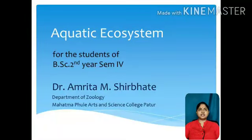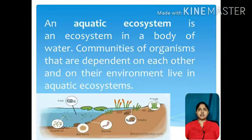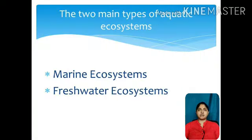Hello friends, today we will discuss about aquatic ecosystems. An aquatic ecosystem is an ecosystem in a body of water — a community of organisms that are dependent on each other and on their environment live in aquatic ecosystems. The two main types of aquatic ecosystem are marine ecosystem and freshwater ecosystem.